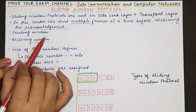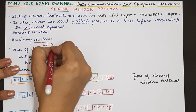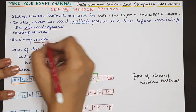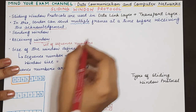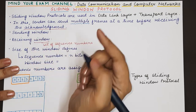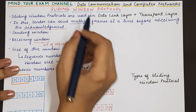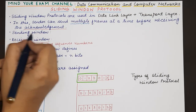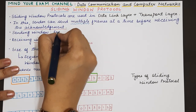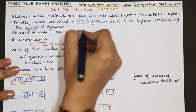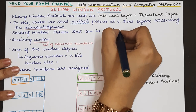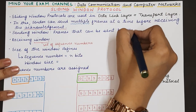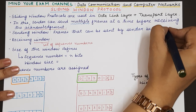A window is a set of sequence numbers. Sequence numbers are the numbers assigned to each part of the data that is to be transmitted. The sending window is the set of sequence numbers or frames that the sender is allowed to send. In the data link layer, the sending window consists of all those frames that can be sent by the sender before waiting to get the acknowledgement from the receiver.